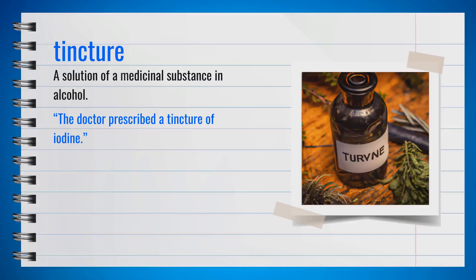The word tincture, spelled T-I-N-C-T-U-R-E, is a noun. A tincture is a solution of a medicinal substance in alcohol. For example, the doctor prescribed a tincture of iodine. In summary, tincture is a medicinal solution in alcohol.